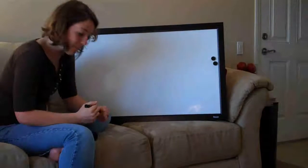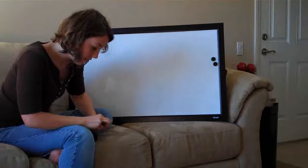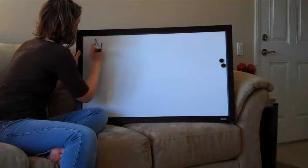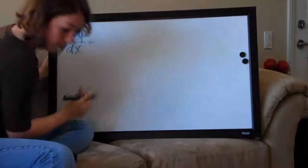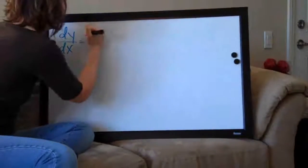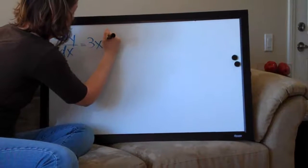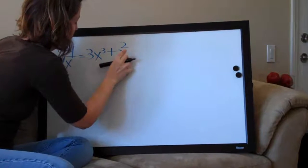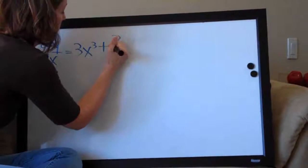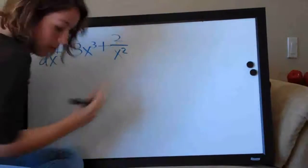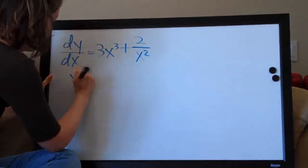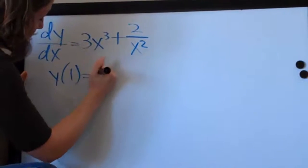Hi everybody, welcome back. Today we're going to be doing some initial value problems. The first one we're going to do is dy over dx equals 3x cubed plus 2 over x squared, and the initial condition they give us is y of 1 equals 1.